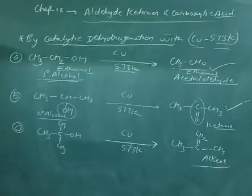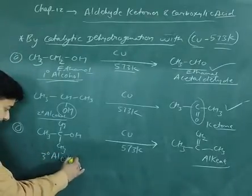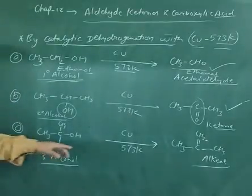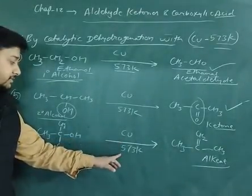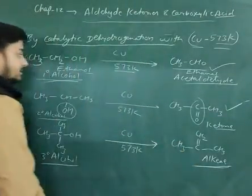Come to the third reaction. This is a tertiary alcohol and tertiary alcohol is going to be oxidized in the presence of copper at temperature 573 kelvin. It will be converted into alkenes.